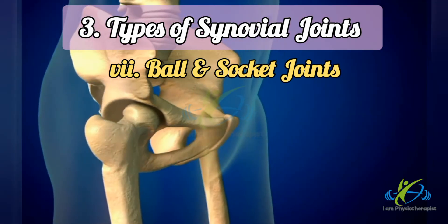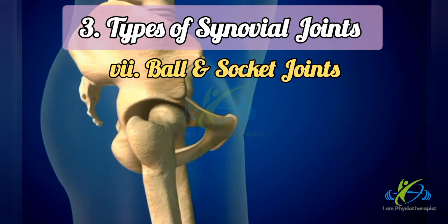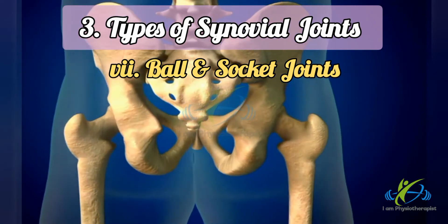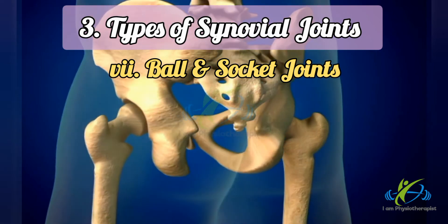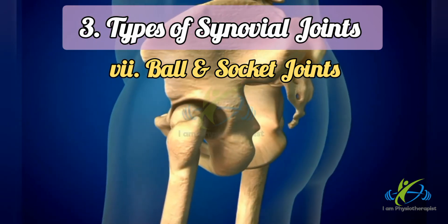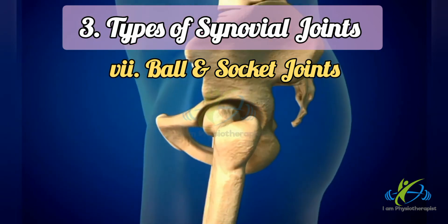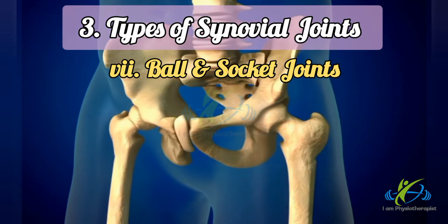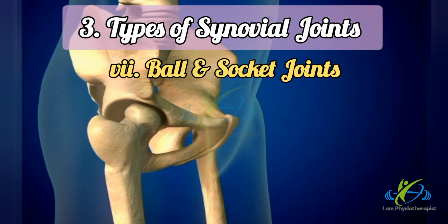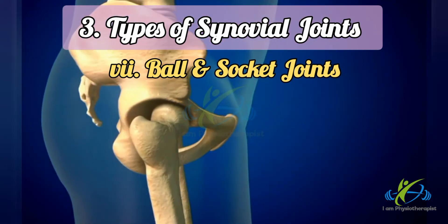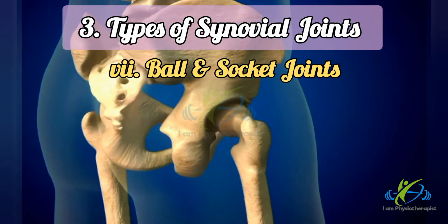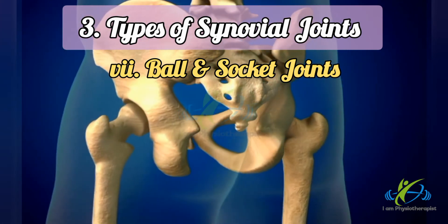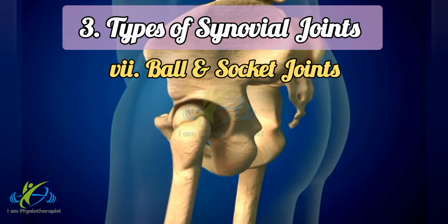Ball and socket joints: articular surfaces include a globular head fitting into a cup-shaped socket. Movements occur around an indefinite number of axes which have one common center. Examples include shoulder joint, hip joint, and talocalcaneonavicular joint.